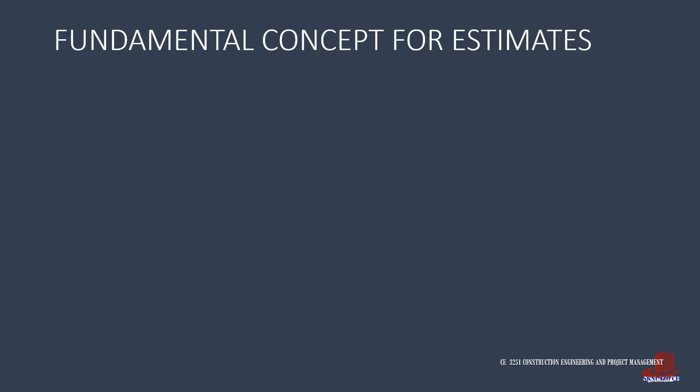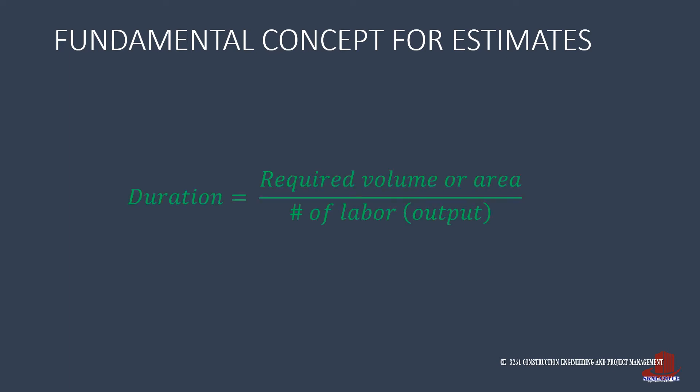When estimating labor costs or duration, the primary concept used in each activity is that duration is the result of comparing the required quantity — which could be a total length, volume, or area — with that of the available resources, which can be from manual labor or through some equipment and their standard output.